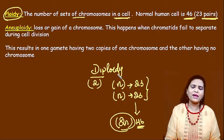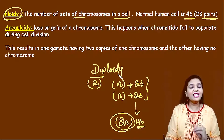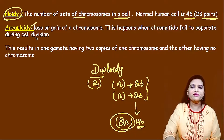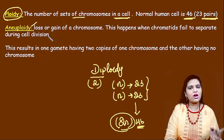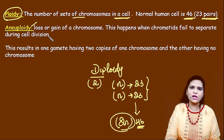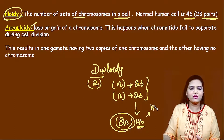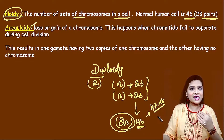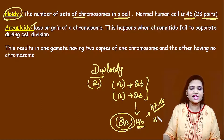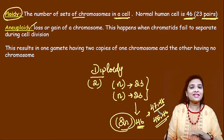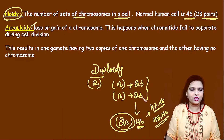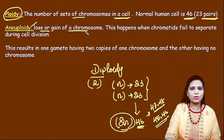So what happens if there is any variation in this ploidy? That is called aneuploidy. Aneuploidy is loss or gain in the number of chromosomes. It may be an increase — instead of 46, it could be 47 or 48. If there is a loss — instead of 46, if there is 45 or 44 — this is also called aneuploidy. Aneuploidy means loss or gain of chromosomes.